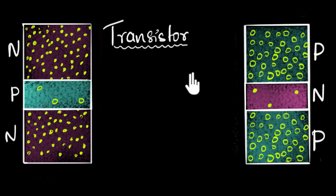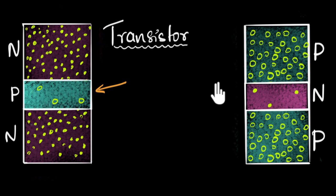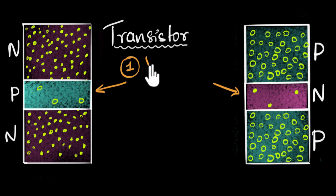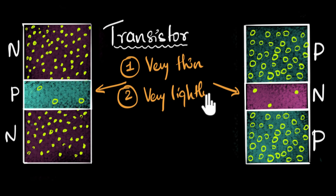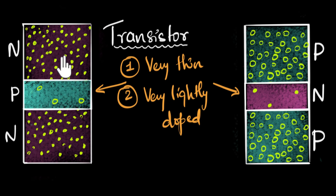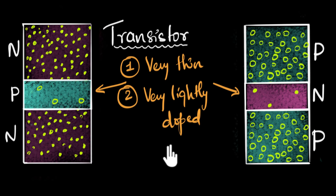The key to the working of a transistor is the middle region. This middle region — the P-type or N-type in the center — must satisfy two conditions. One, it has to be very thin. And two, it has to be very lightly doped. As you can see, the doping here is much smaller than what you have on either side. We'll see now that under such circumstances, these things will act like an amplifier.